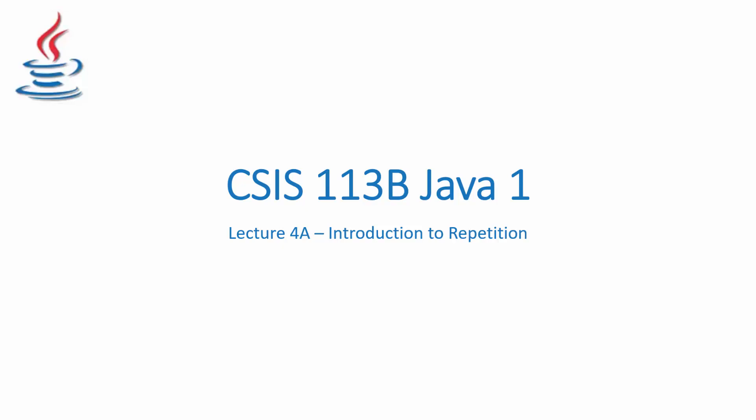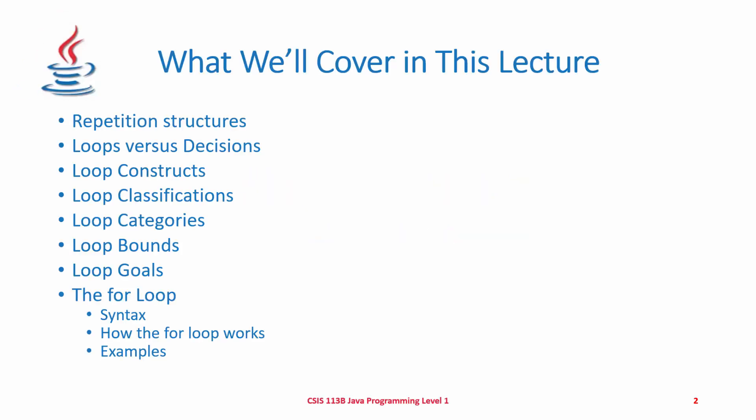Welcome to CSIS 113B Lecture 4A. This is an introduction to repetition, also known as looping or iteration. Here's what we'll cover in this lecture: various repetition structures, loops versus decisions, loop constructs, loop classifications, loop categories, and the importance of defining the bounds and goals in your looping structures. Then we'll look in detail at the for loop — its syntax, how it works, and we'll have some examples for you.